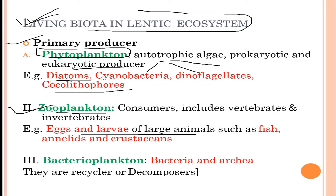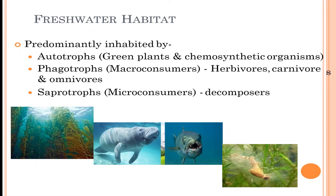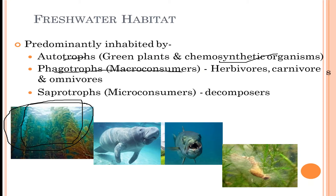Bacterioplankton — bacteria and archaea — are the decomposers. So phytoplankton are producers, zooplankton are consumers, and bacterioplankton are decomposers. Autotrophs are green plants and chemosynthetic organisms. Phagotrophs or macro-consumers are herbivores, carnivores, or omnivores — the larger organisms like sharks. Saprophytes are the decomposers, including bacteria and algae.